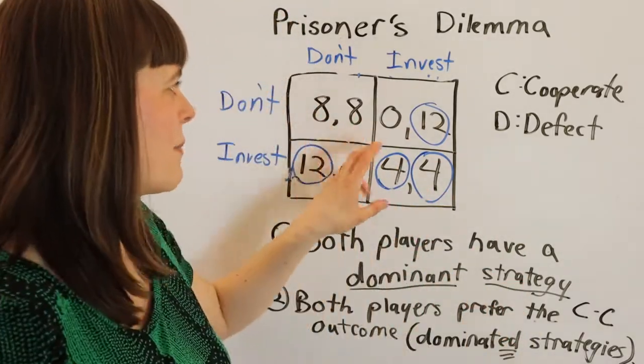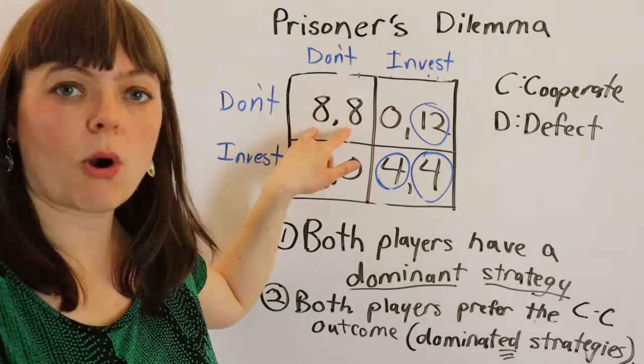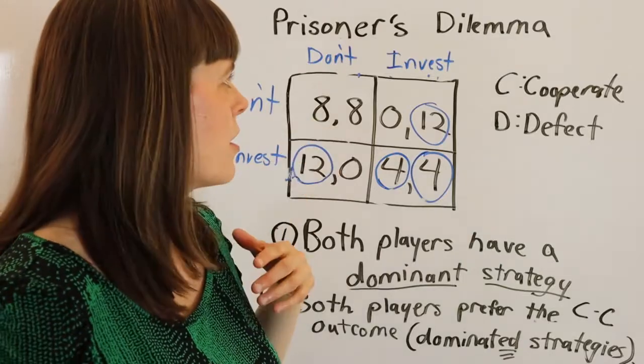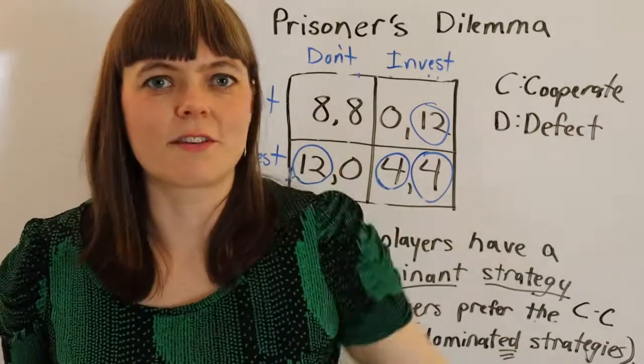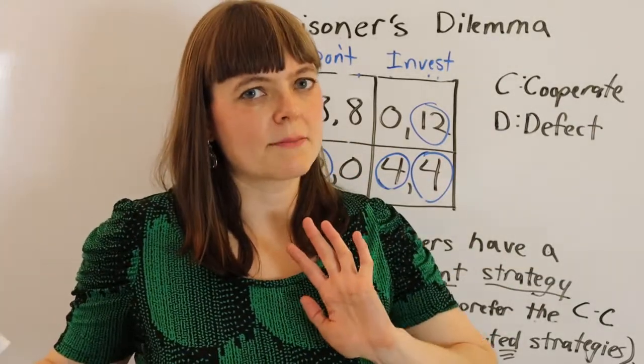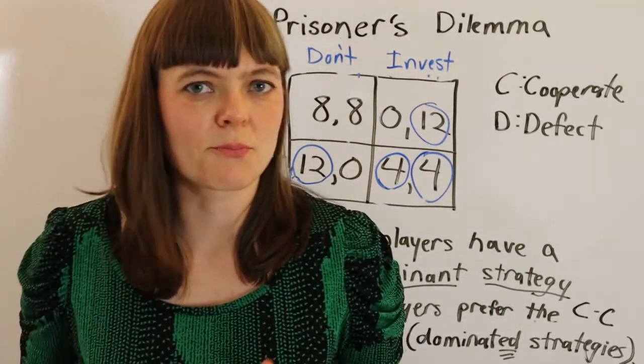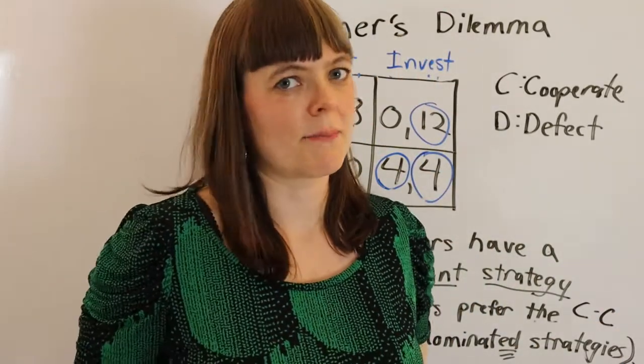For example, you can have prisoner's dilemmas where you sustain the cooperative equilibrium in the long run if the game is repeated over and over and over for an indefinite period into the future. But that's repeated games. That's for another video. For now, this is one of the classic prisoner's dilemmas that you see with duopolies.